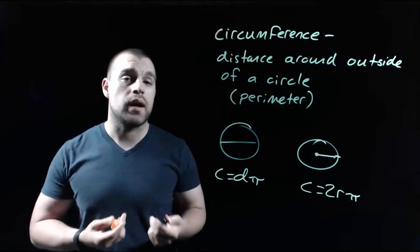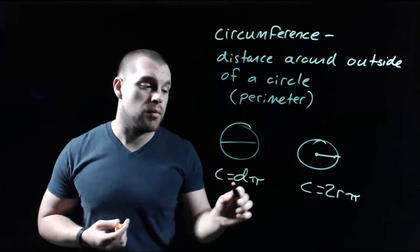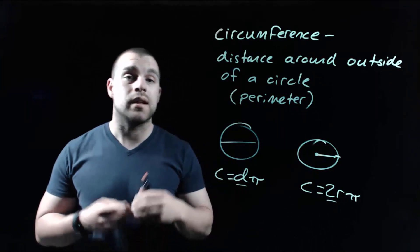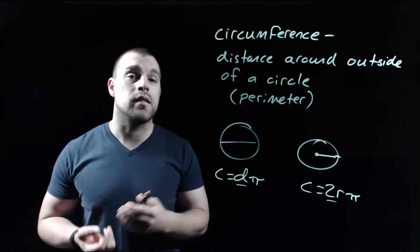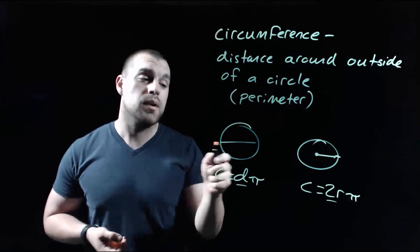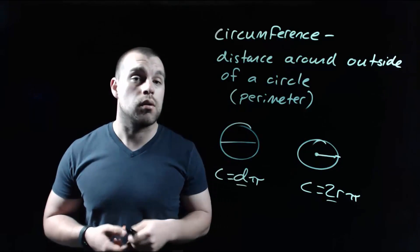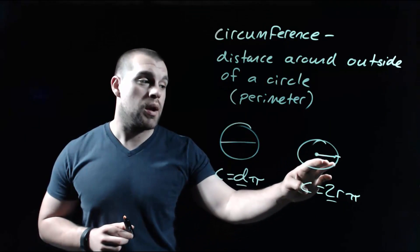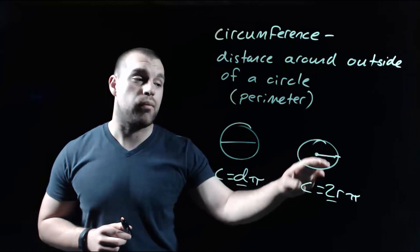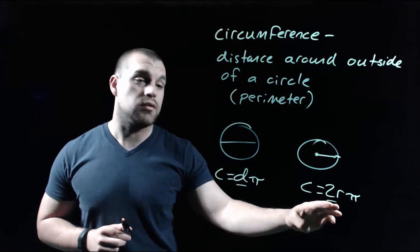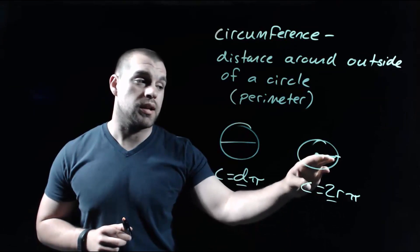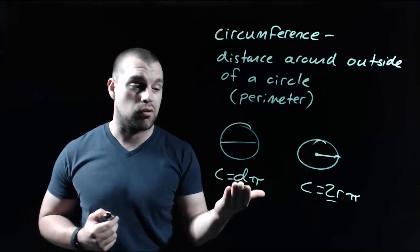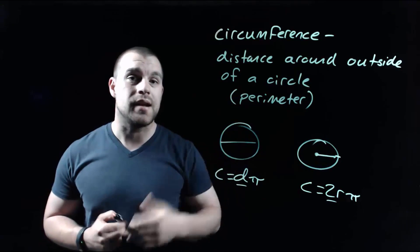What we should recognize from these formulas is that the diameter and two times the radius are exactly the same thing. Because a diameter goes all the way across through the middle of our circle, and our radius only goes halfway. So if we had two times our radius, that would take us the full way across our circle, which would be a diameter.